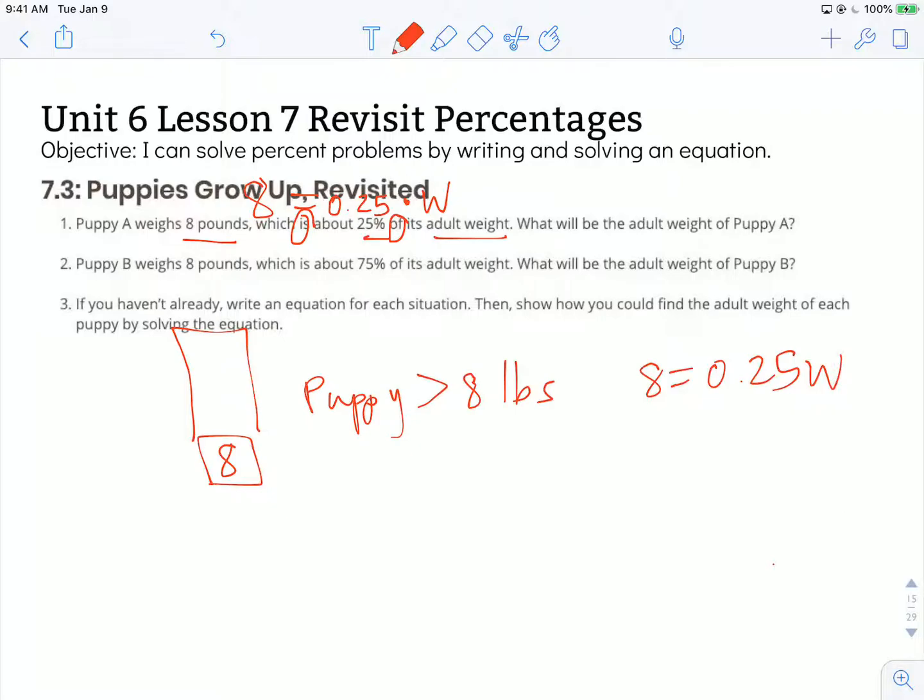So right now, the adult weight of that puppy is being multiplied by 25%. So if I want to get rid of that 25 hundredths, I'm going to use the inverse operation of multiplication, which is division.